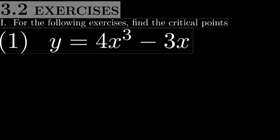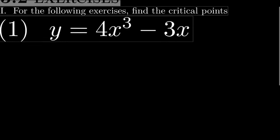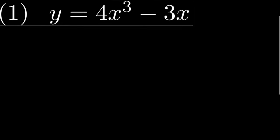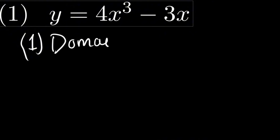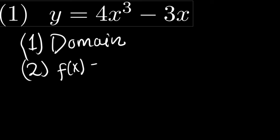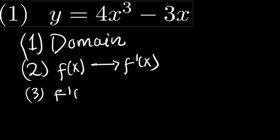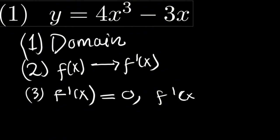Today we are going to find the critical points of a function. In order to find the critical points, three things must be kept in consideration. First, you have to find the domain of the function. Second, you have to derive the function. Thirdly, we have to take the derived function and make it equal to zero, or check when the function is undefined.